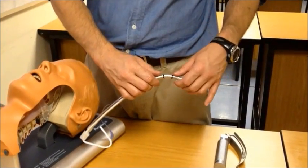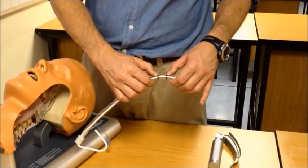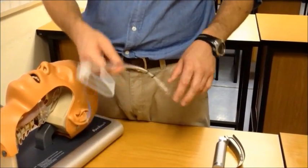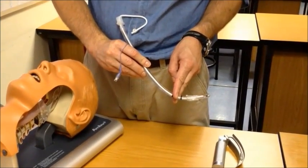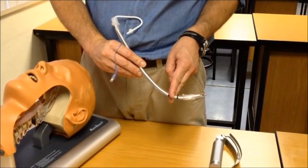On this particular ET tube, please note these two dark markers called the vocal cord markers. When intubating, it is prudent to allow the vocal cords to rest between those two, giving added visual feedback on correct placement of the tube.